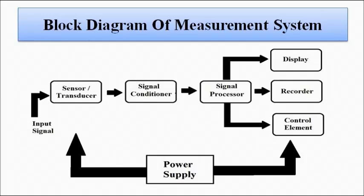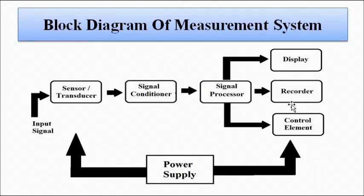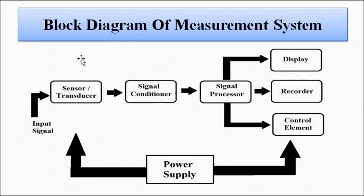Let us look at the block diagram representation of the measurement system. First we have the input signal, which is applied to the sensor/transducer that performs signal conversion. The signal is then conditioned and processed by the signal conditioner and processor elements. Then we have the output elements, which can be used for display, for recording data, or for employing any control mechanism. The power required by the various blocks of this measurement system is supplied by the power supply unit.